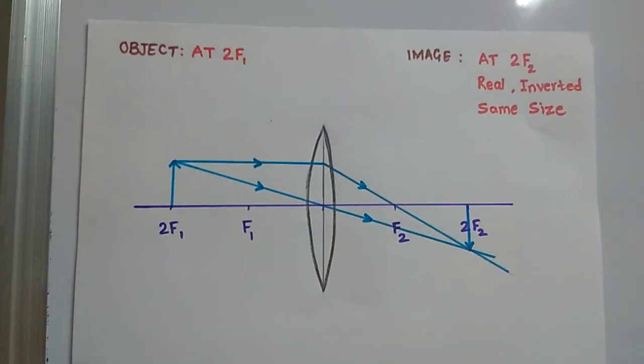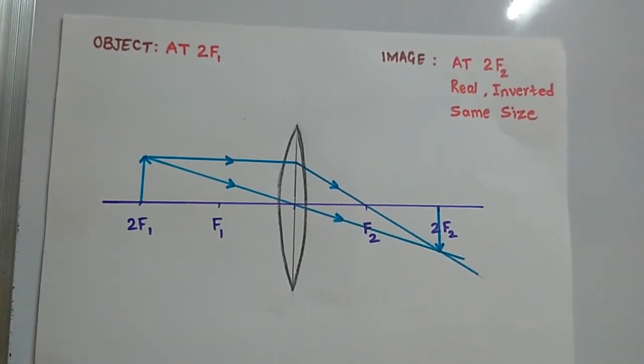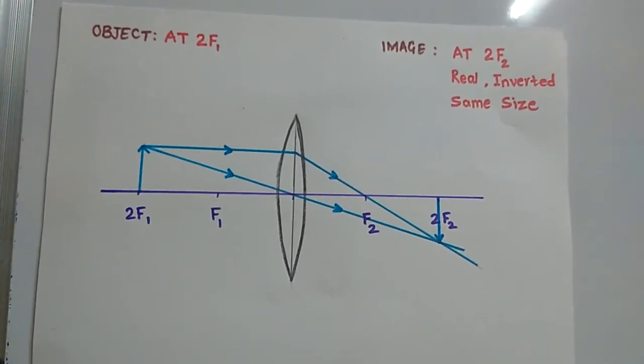So this is the case when the object is placed at 2f1—the image is also formed at 2f2, real, inverted, and of the same size.